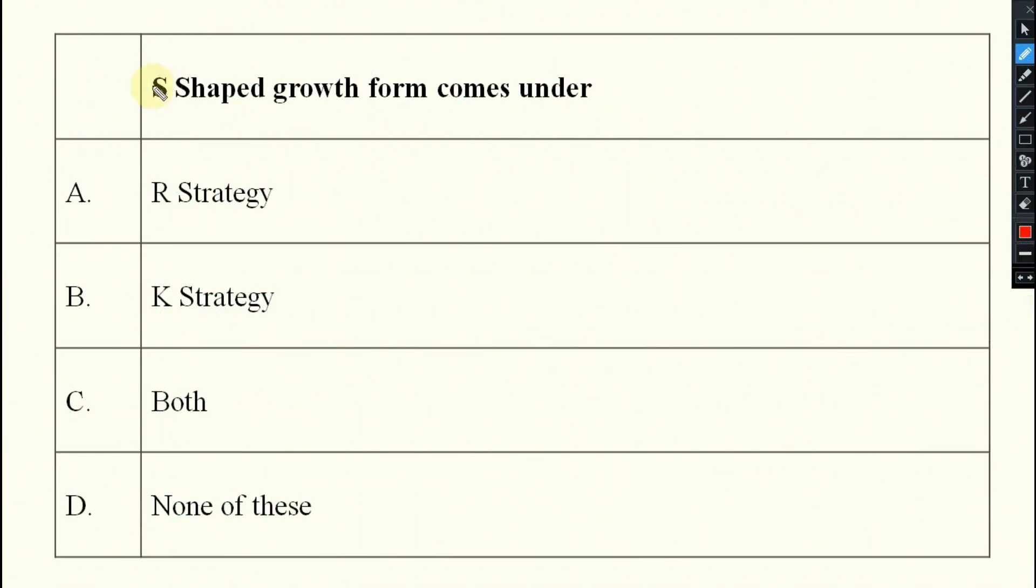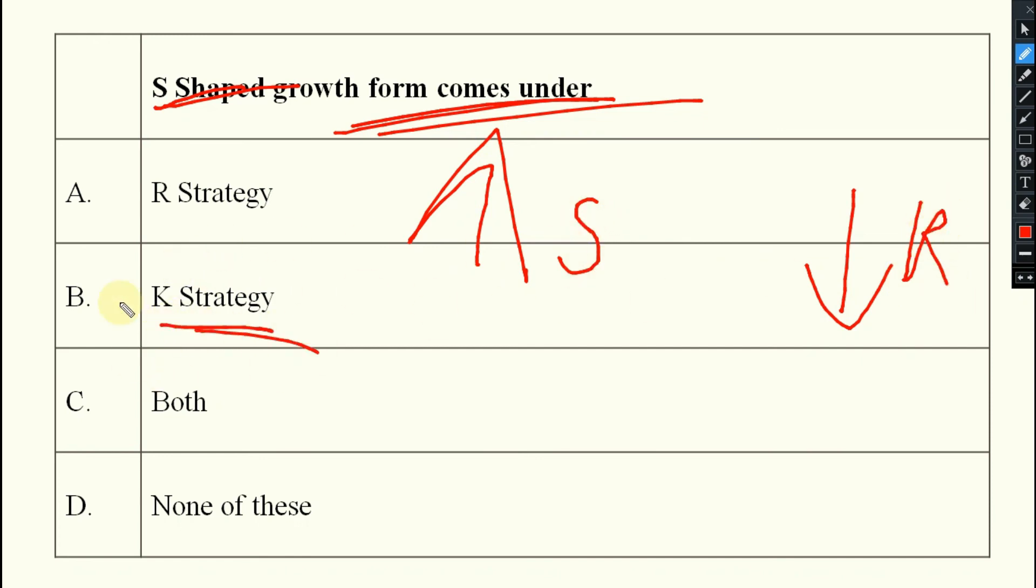So now coming to the last question: S-shaped growth form comes under which category? That means survival rate is high, reproductive rate is low. So it won't be S strategy, it is known as your K strategy. So the option will be B, that is your K strategy.